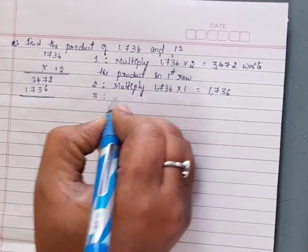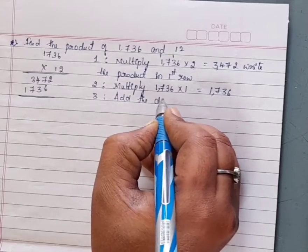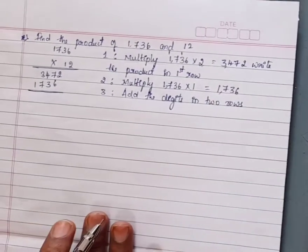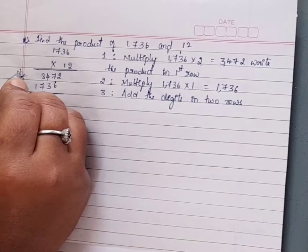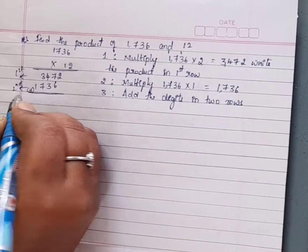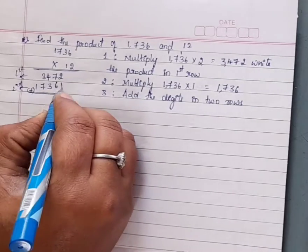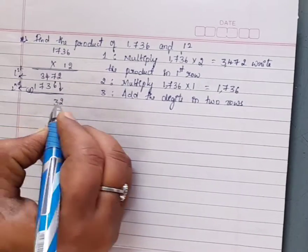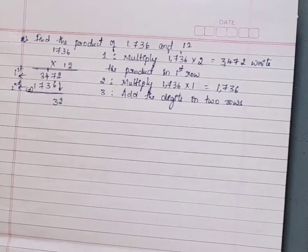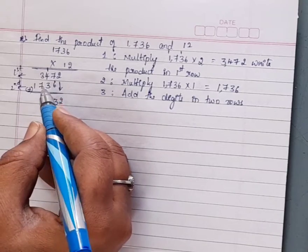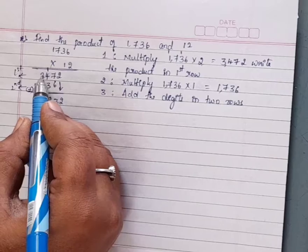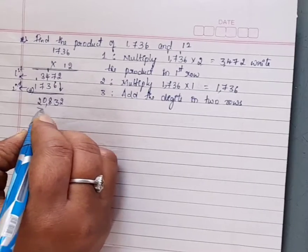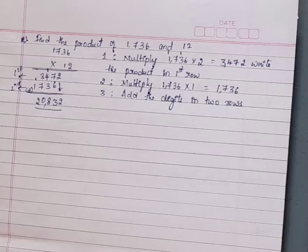Step 3: Add the digits in both rows. 2, 7 plus 6 = 13, carry 1. 4 plus 1 = 5, 5 plus 3 = 8. 3 plus 7 = 10, carry 1. 1 plus 1 = 2. We get the product 20,832.